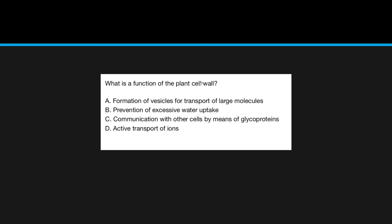So, now, what are the functions of a plant cell wall? So, the formations of vesicles to transport large molecules. This is going to be undertaken by the cell membrane, because this cell membrane will have the ability to kind of conform to whatever it's taking in. The prevention of excess water uptake. Now, this water uptake and excess preventing it is looking pretty well right now. Communicate with other cells by the means of glycoproteins. Again, this is a function or a feature of the cell membrane, which we'll discuss later. And finally, active transport of ions. This is going to be a cell membrane feature as well. That leaves us with B, prevention of excess water uptake.